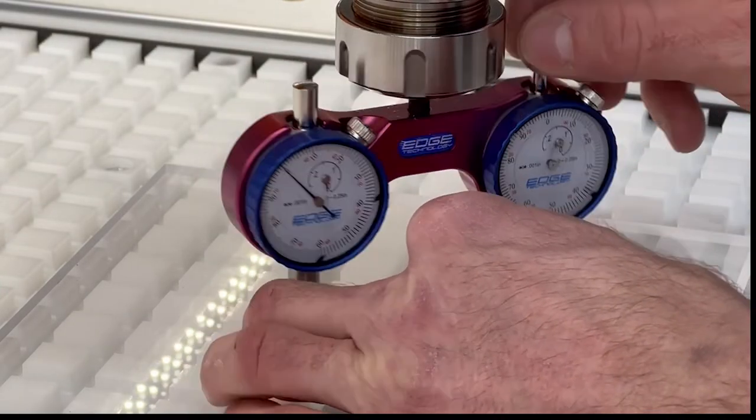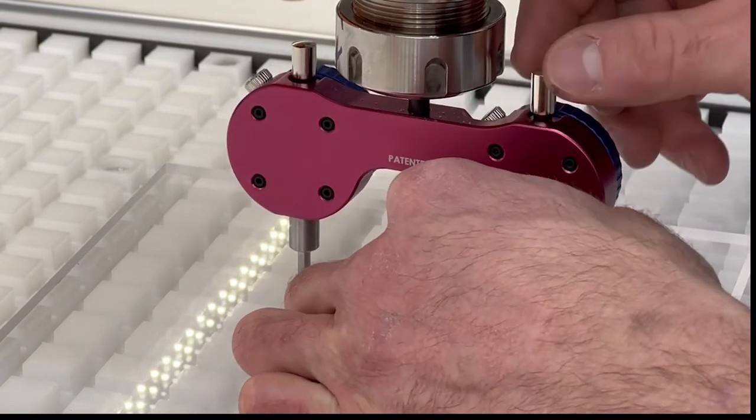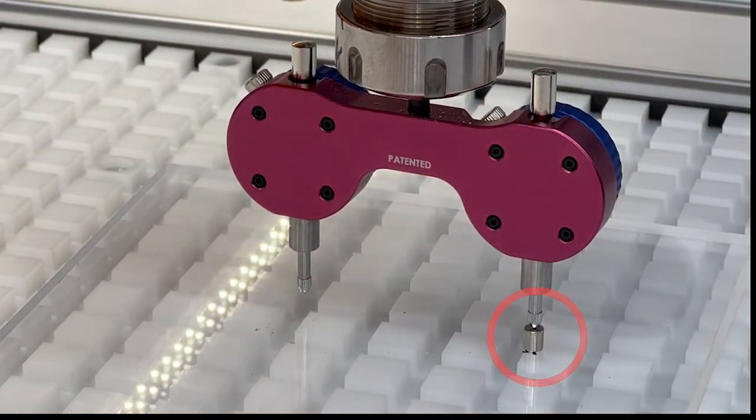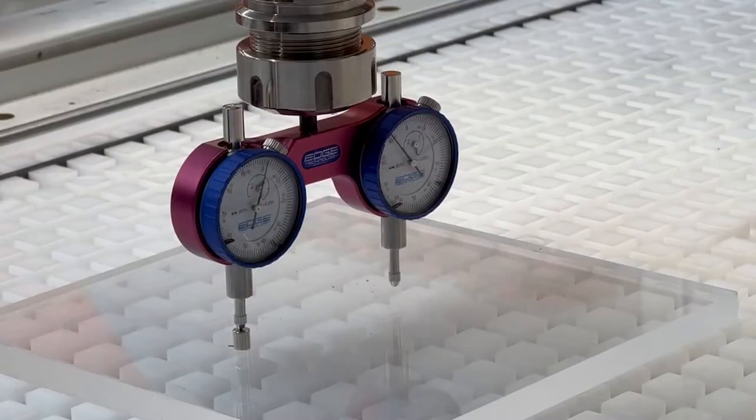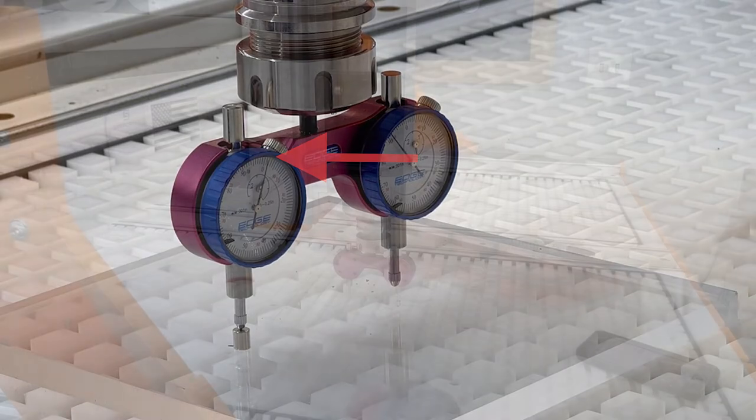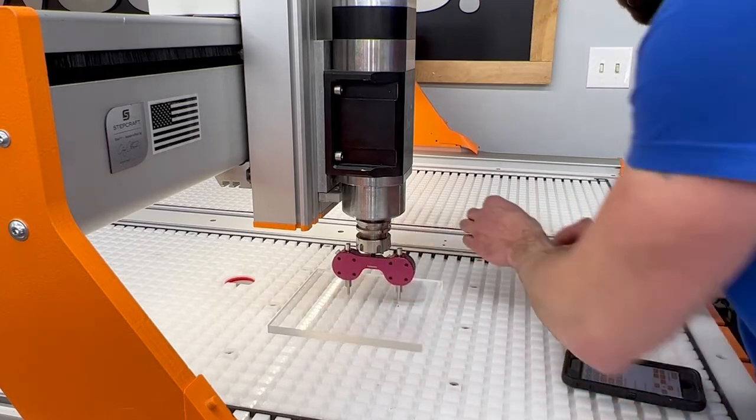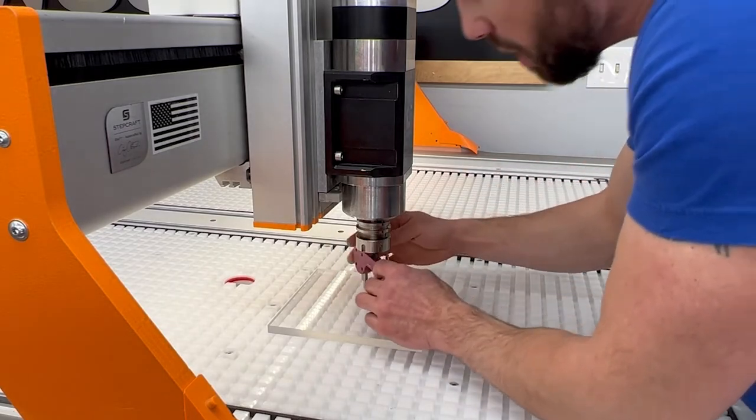Once the one indicator is zeroed out, rotate 180 degrees and repeat the process. You'll see how the left side indicator is now also zeroed out on top of the same magnet. You have now completed the calibration process and both indicators are zeroed out.